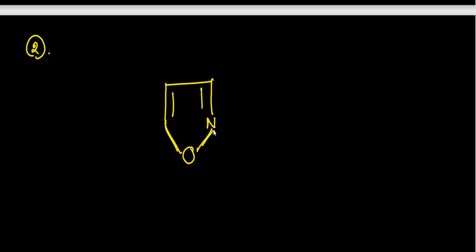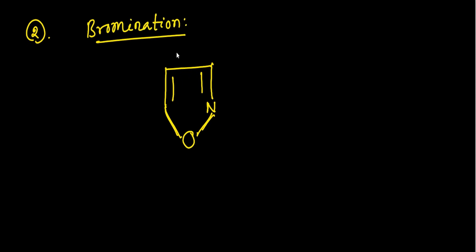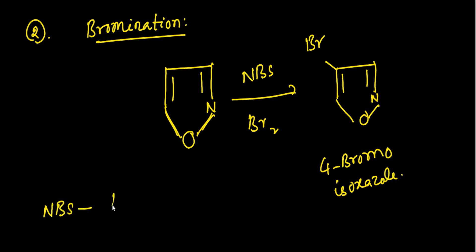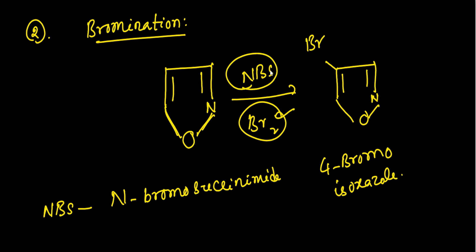The second reaction is bromination. Bromination takes place using NBS (N-bromosuccinimide) or bromine (Br₂). Again, the reaction occurs at the fourth position only, giving 4-bromoisoxazole. So the electrophilic substitution of isoxazole consistently takes place at the fourth position.